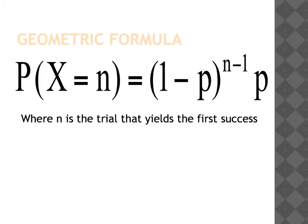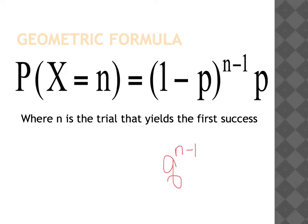In general, here is our geometric formula. The probability that our first success is on our nth try: x always refers to when the first success occurs. We fail — having probability (1-p) — one less time than our number of trials, and then we succeed on the last try with probability p. Remember that sometimes you'll see the notation q instead of (1-p), which is another way to represent this formula.